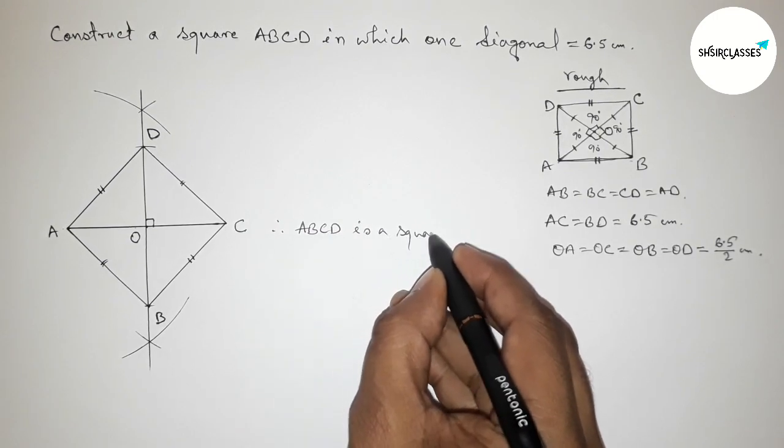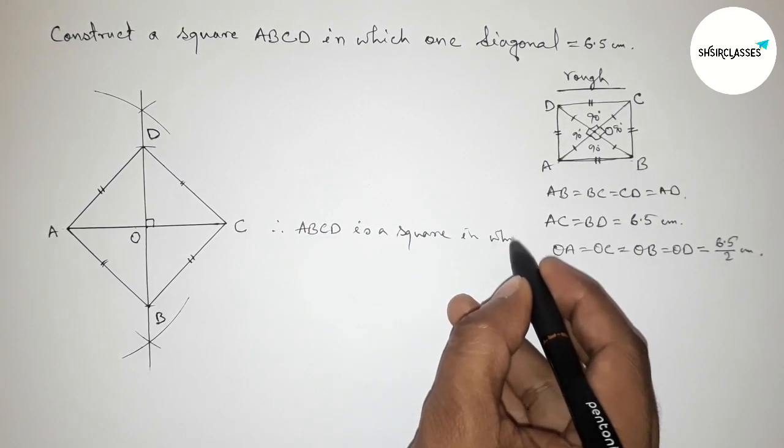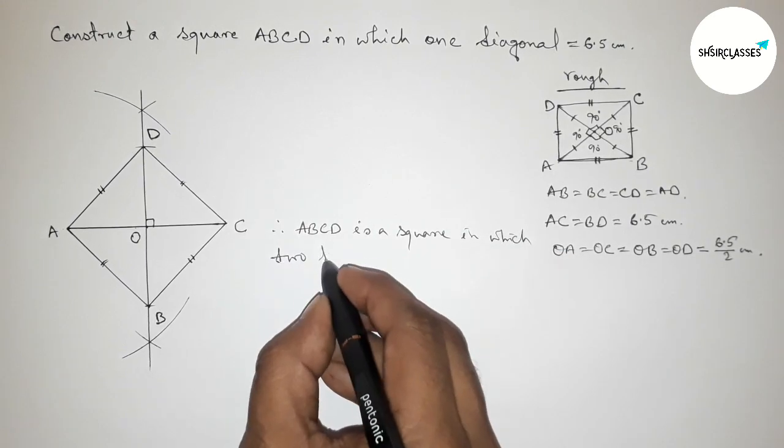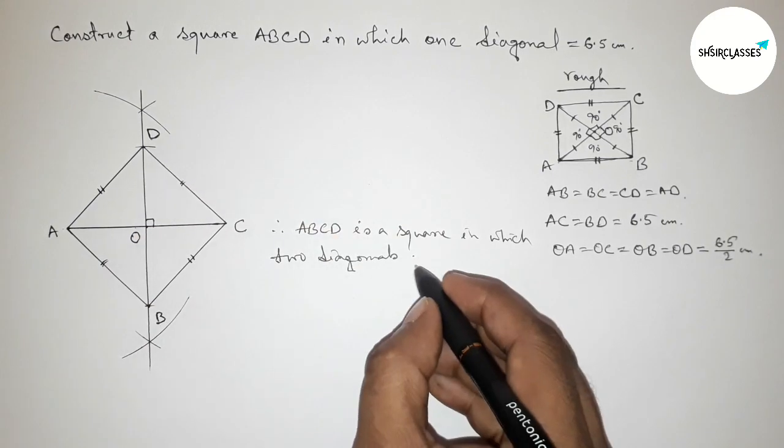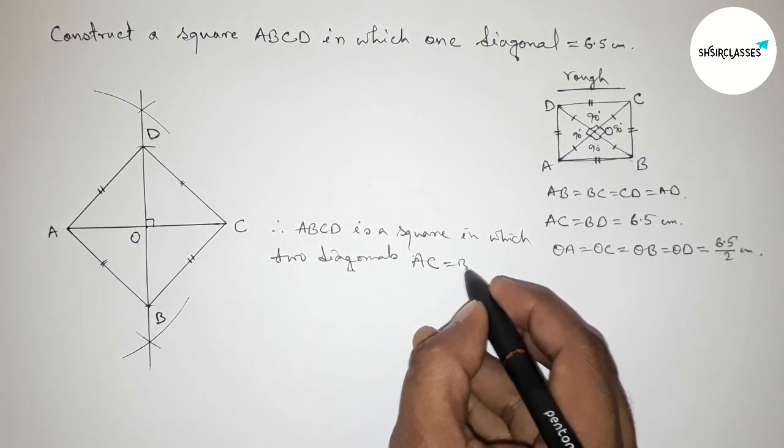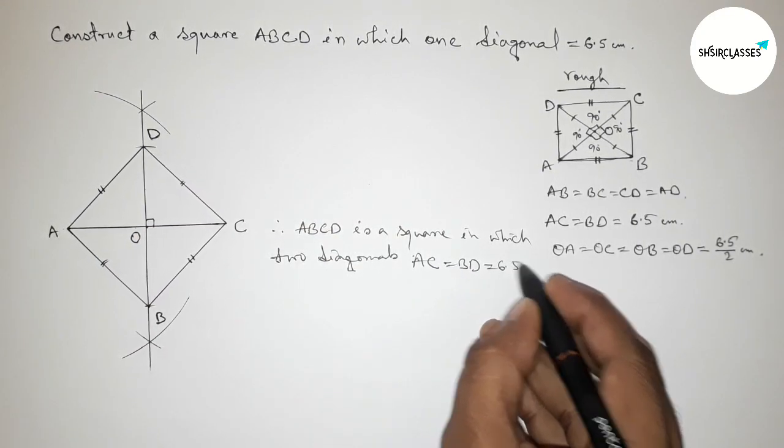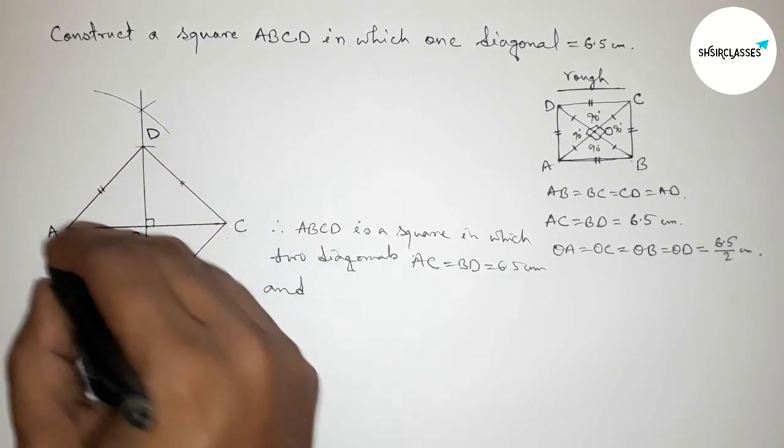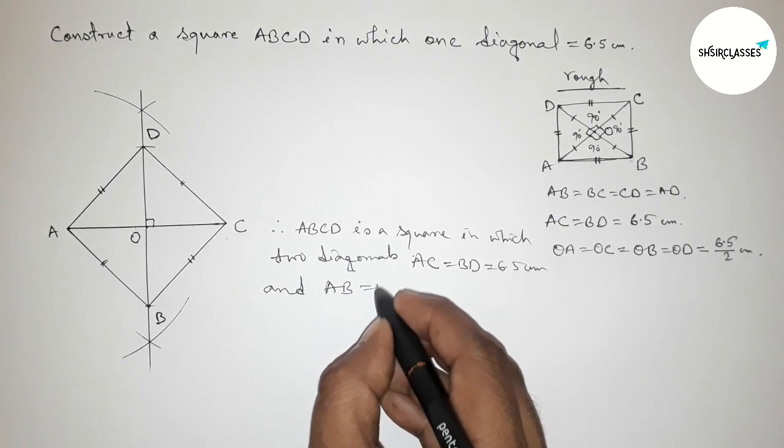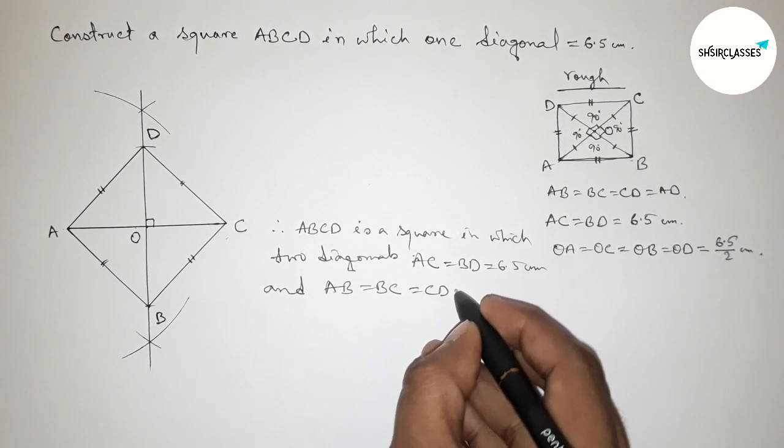So therefore here ABCD, ABCD is a square in which the two diagonals here AC and BD are equal, so equals to 6.5 centimeter.